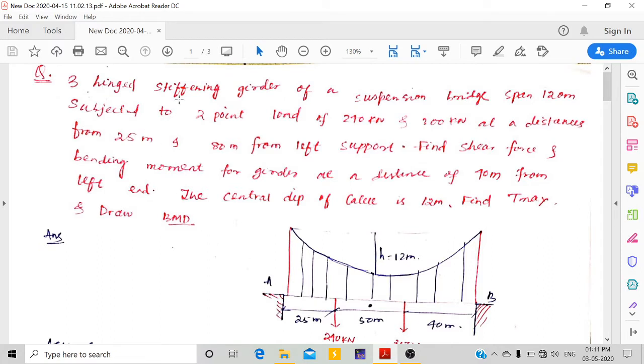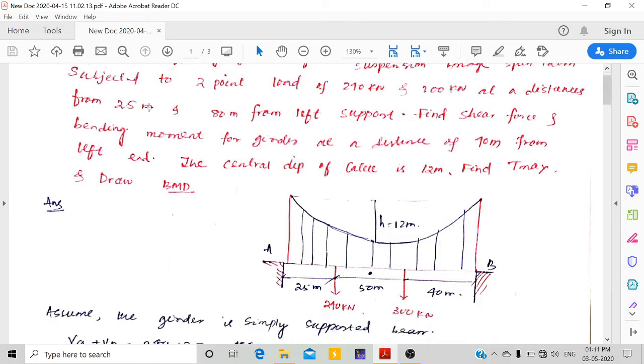In this question, a 3-hinged stiffening girder of a suspension bridge, 120 meters, is subjected to point loads of 240 kN and 300 kN at distances of 25 meters and 80 meters from the left support. We need to find the shear force and bending moment for the girder at a distance of 40 meters from the left end. The central dip of the cable is 12 meters. We also need to find T_max and draw the bending moment diagram.